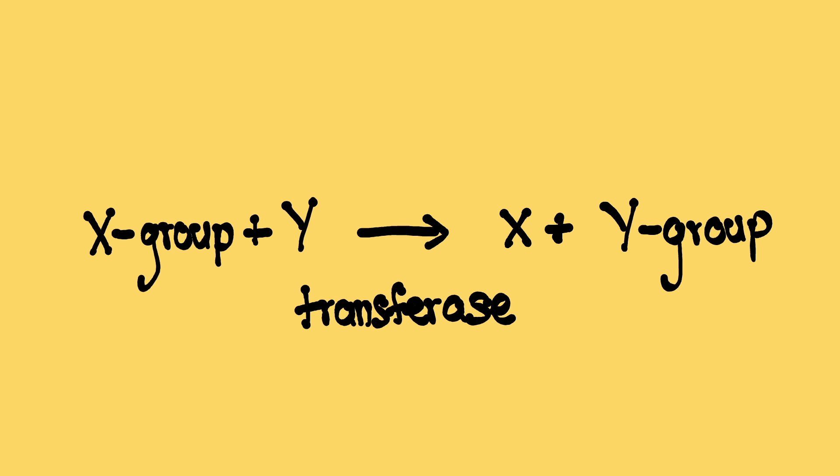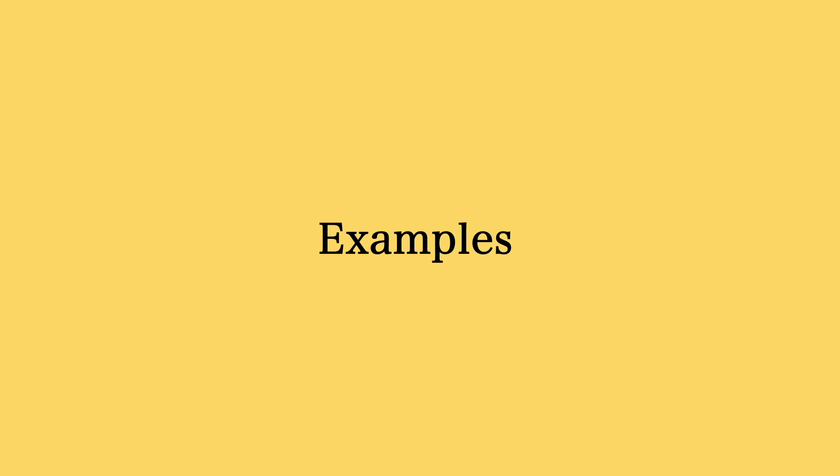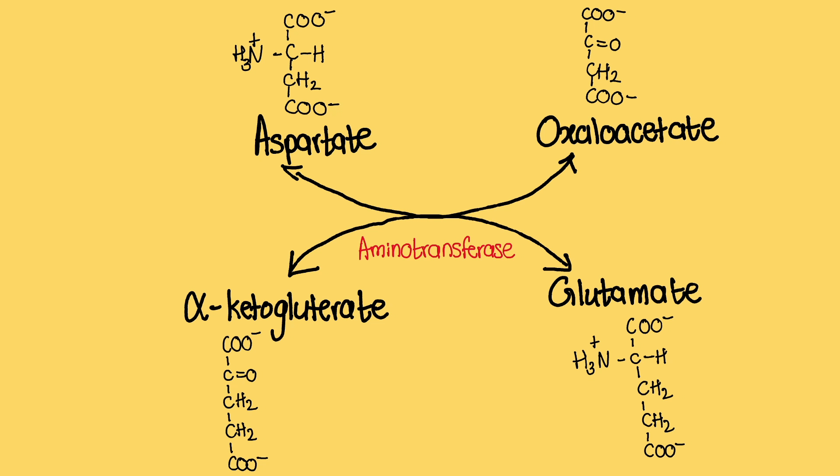The molecule that is giving up the functional group is called the donor and the molecule that is taking on the functional group is called the acceptor. Let's look at some examples to learn more about transferases. Take aminotransferase as an example. In protein metabolism, an aminotransferase can convert aspartate and alpha-ketoglutarate to glutamate and oxaloacetate by moving the amino group from aspartate to alpha-ketoglutarate.